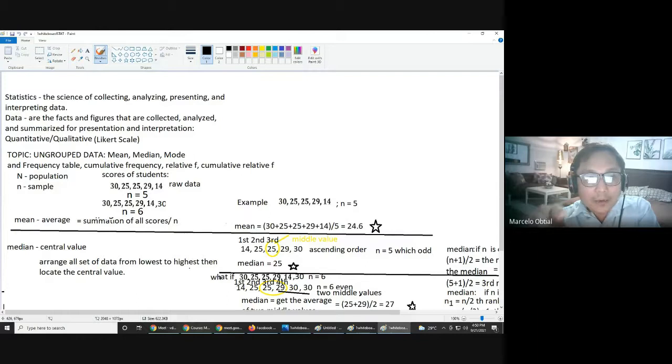And next classification of data is qualitative data. Qualitative data means, from the word itself, quality. Or the root word, quality. It means more on description. For example, you'll be asked, are you contented with the facility at Notre Dame? And you will answer that question, example, yes. Can you please describe your contentment? For example, excellent, very good, good, fair, poor. That's what we can answer to that question.